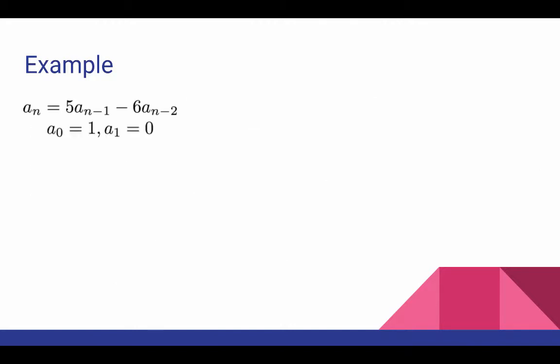Our second example is a little longer. It's this recurrence relation we've seen earlier, but we're going to add the initial conditions a0 equals one and a1 equals zero. Now we saw earlier that the characteristic equation for this recurrence relation is r squared minus 5r plus 6 equals zero. And so the characteristic roots are three and two.